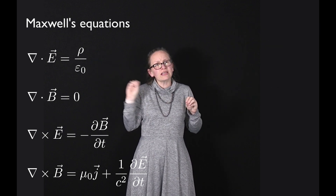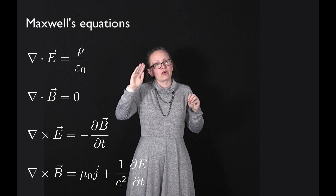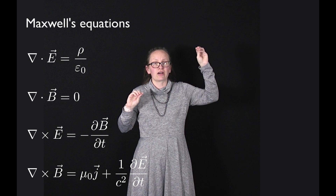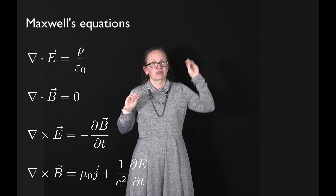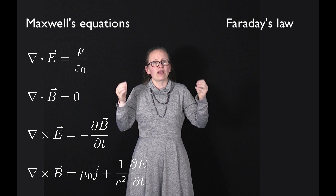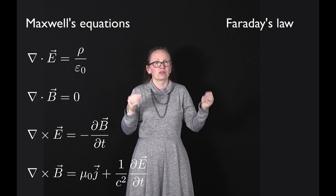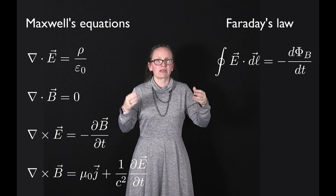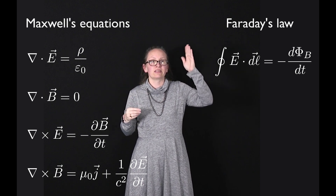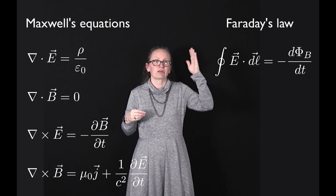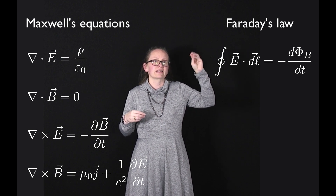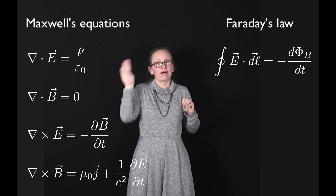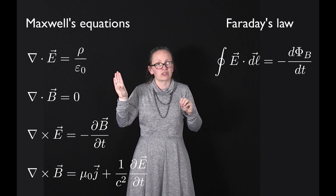Maxwell's third equation, del cross E — the curl of E — equals minus the partial derivative of B with respect to t, is another way of writing Faraday's law for induced electric fields. We saw that we could write this in integral form as the integral around a closed loop of E dot dL equals minus d phi_B / dt.